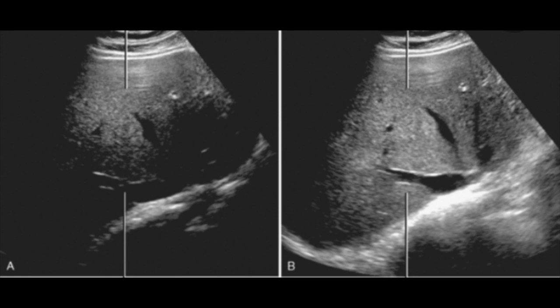Now let's get into some ultrasound terminology. This is a grayscale image of the liver — grayscale just means black and white. The first word is gain. Gain is a button on the ultrasound machine you can rotate to amplify the ultrasonic signal, making the image brighter. You can see two images: the one on the left has lower gain, and the one on the right has higher gain and increased brightness. You're supposed to have a medium gray, but this shows what gain does.